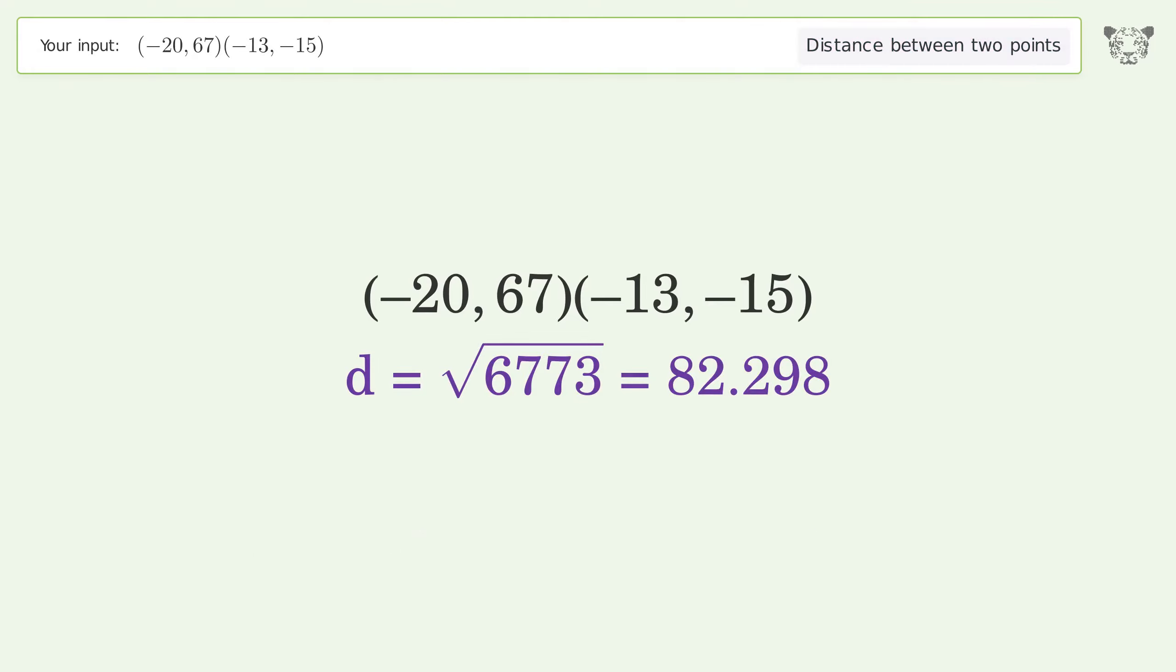You asked to calculate the distance between two points. The distance between the two points is the square root of 6773 or 82.298.